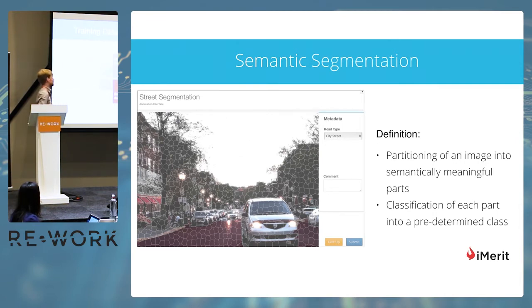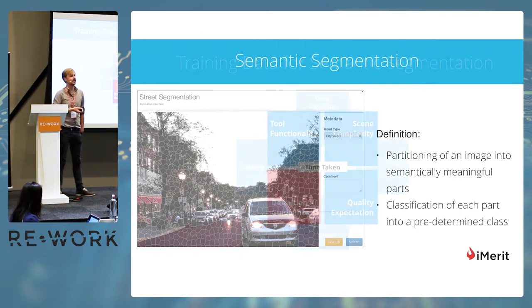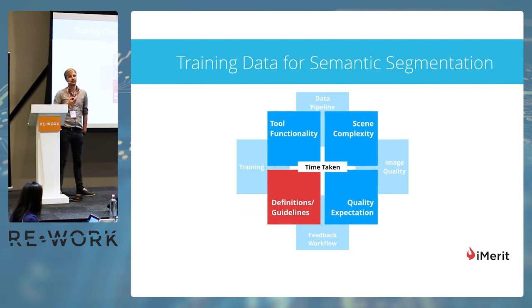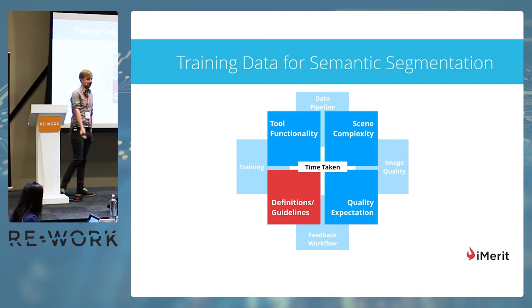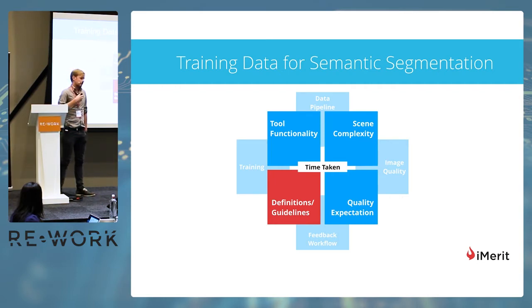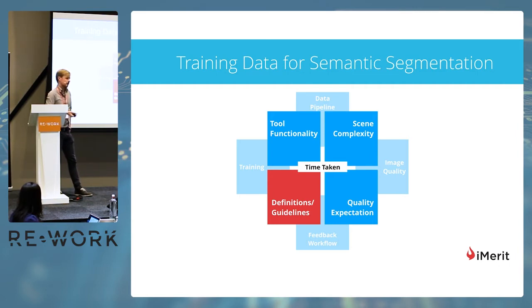If we're talking about semantic segmentation in particular, there are a number of challenges. If any of you have experienced doing such a manual labeling task, this actually takes quite a while. Just to throw one number out there — it depends on all these factors — but an hour per image can easily be the case. That's a challenge if you think about current data sets, how big they are, and the needs for labeled data. I came up with four main categories based on our observations and experience.